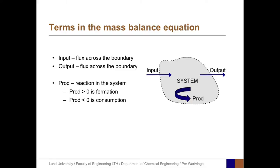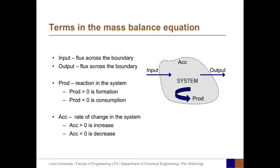If the production is positive, this means that we have a formation of a substance. If the production is negative, it means we have a consumption of a substance. The fourth term is the accumulation term, representing the rate of change in the system. If the accumulation term is greater than zero, we have an increase of a substance within the system. If the accumulation term is less than zero, we have a decrease.